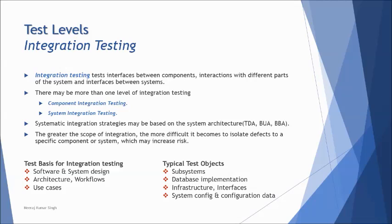System integration testing (SIT) deals with a small unit of the system — generally a particular transaction within a big application. You collect several SITs and combine them as one system altogether. In certain cases, SIT can be conducted after system testing. For example, in embedded testing, system testing is done for software and hardware separately, and then you perform system integration where two systems — software-hardware, hardware-hardware, or software-software — are integrated together.